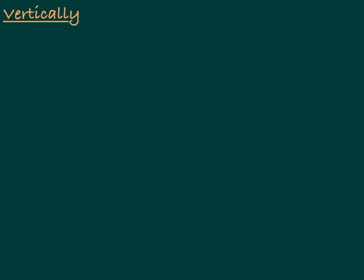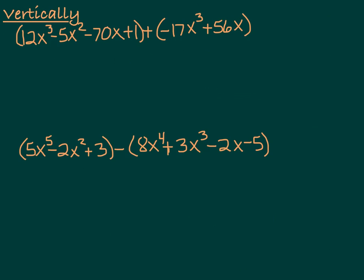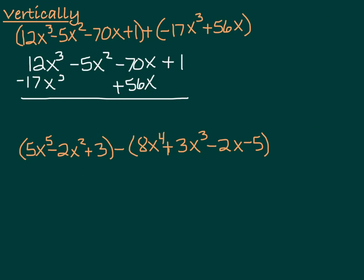When you get into really long, complicated polynomials, sometimes it's easier to do it vertically. You line up your like terms and then add or subtract down. Here are two different examples. The first one: 12x cubed minus 5x squared minus 70x plus 1, plus negative 17x cubed plus 56x. If we line these up vertically, I line up my like terms together. Adding: 12 plus negative 17 is negative 5x cubed. Adding nothing to negative 5x squared gives minus 5x squared. Negative 70 plus 56 is minus 14x. And 1 plus nothing is 1.